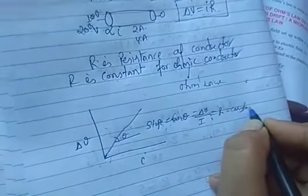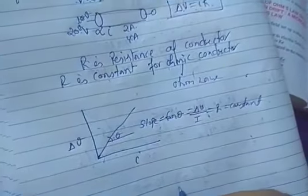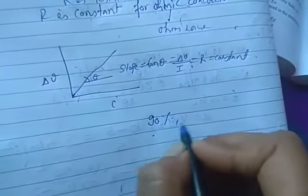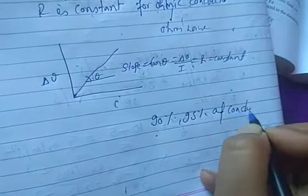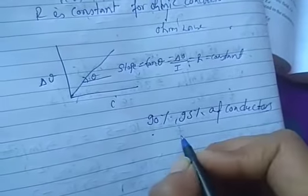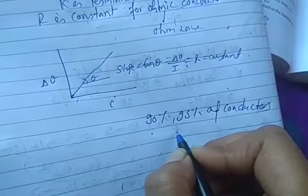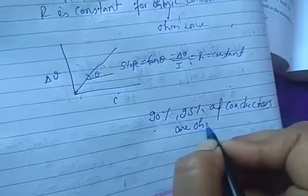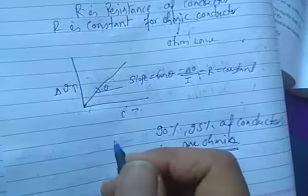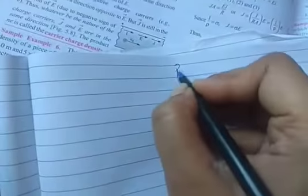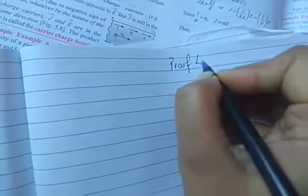About 95% of conductors in your course are ohmic because they follow Ohm's law. When voltage increases, current also increases. Now we will prove Ohm's law — in class 10 you did not study the proof, but now we will write it.